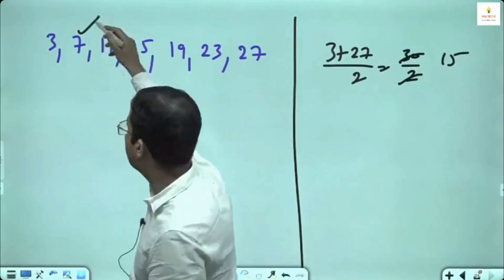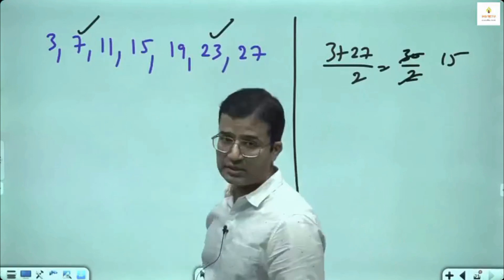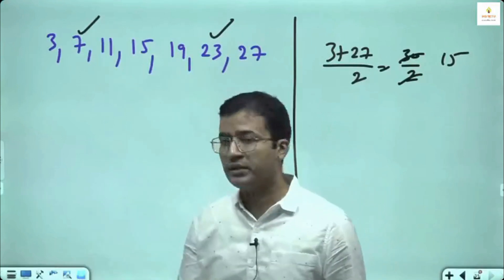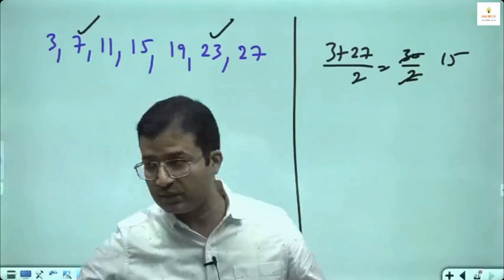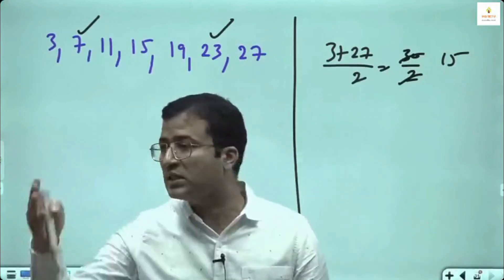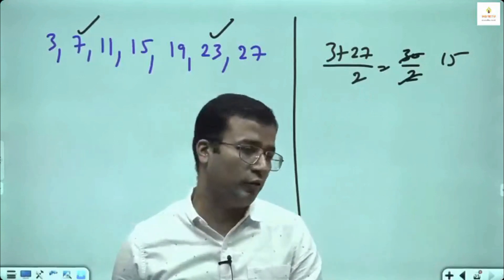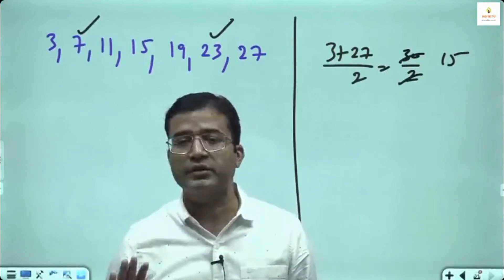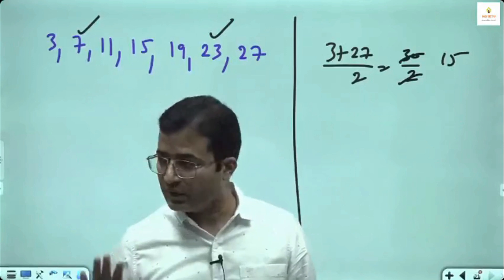You can say second term from starting, second term from the last. Corresponding pairs: first term make pair with the last term, second term make pair with the second last, third term make pair with the third last, fourth term make pair with the fourth last, fifth term make pair with the fifth last.